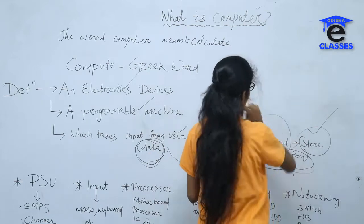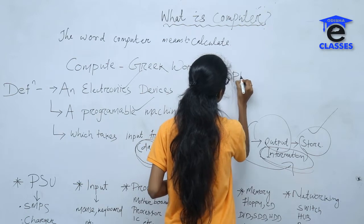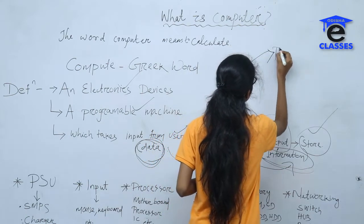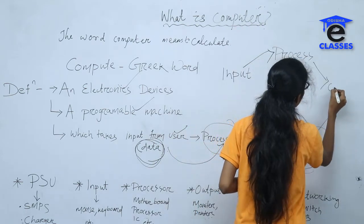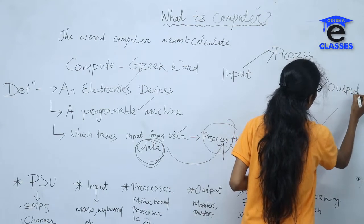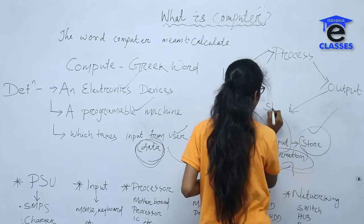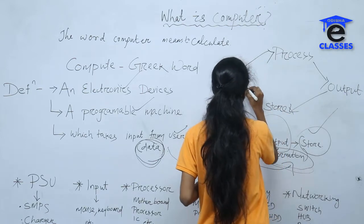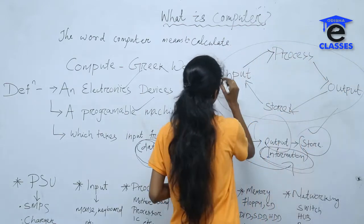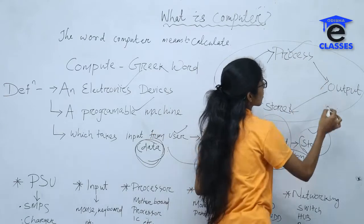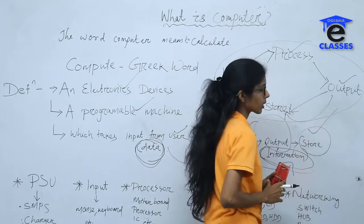We can draw the computer system like this: we have input, then we make it go to process, then output, and again to storage. This is our computer process — take input, process it, provide the required output, and store it so we can use it in the future.